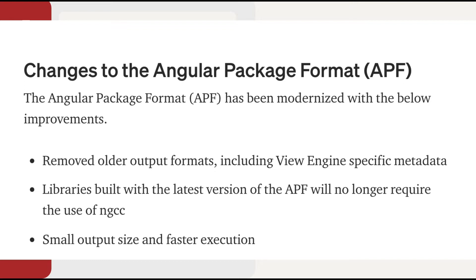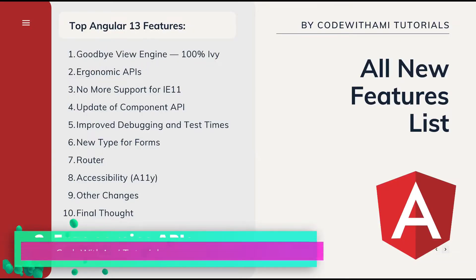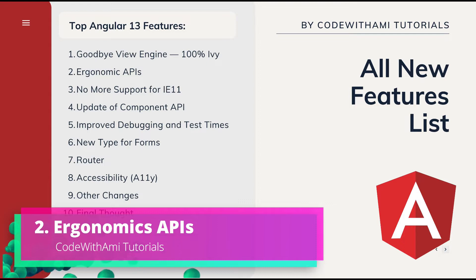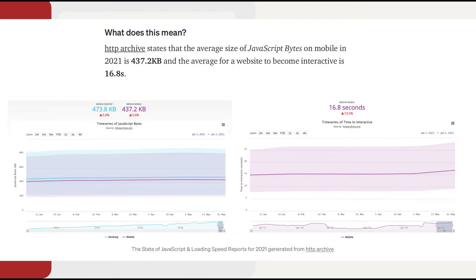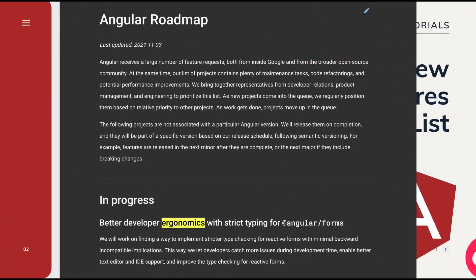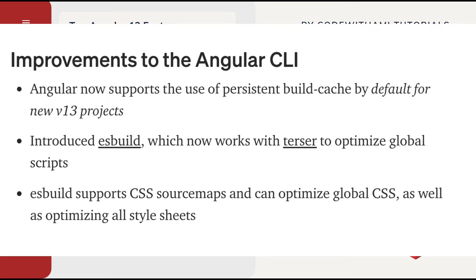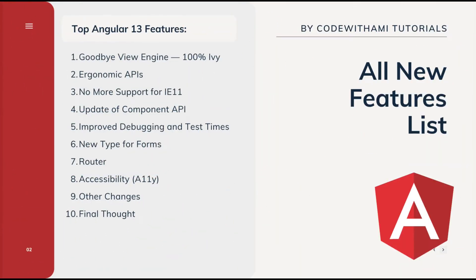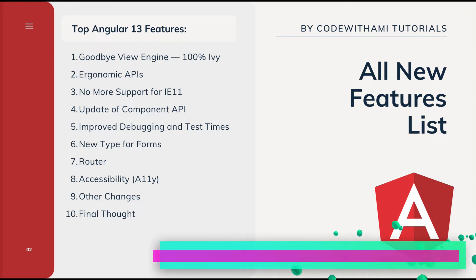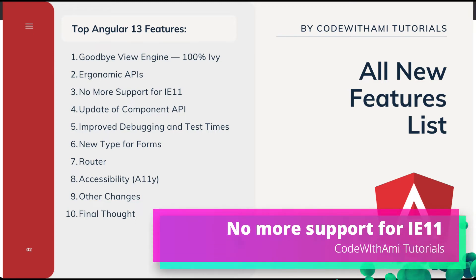The second feature is the Ergonomics API. Load time is reduced in Angular 13 with ergonomic code-splitting APIs and granular code breakdown at a component level. A performance improvement was also achieved with the introduction of esbuild, an extremely fast JavaScript bundler. esbuild now works with Terser to optimize global scripts and supports CSS source maps, which enables optimized global CSS.